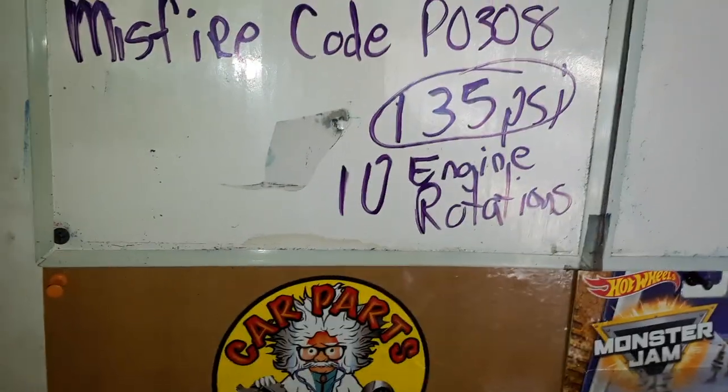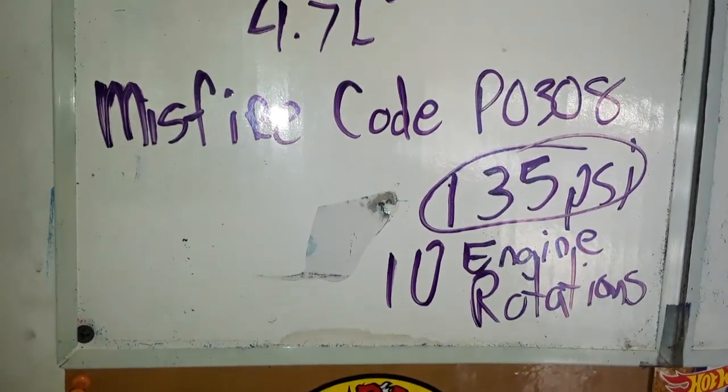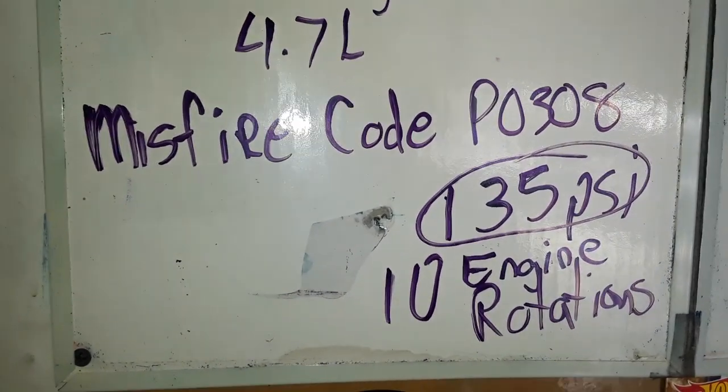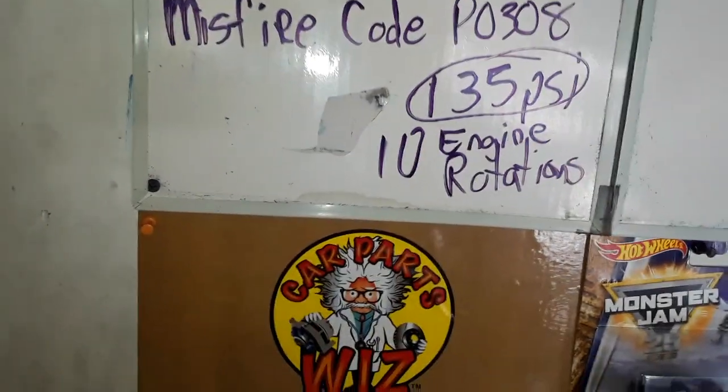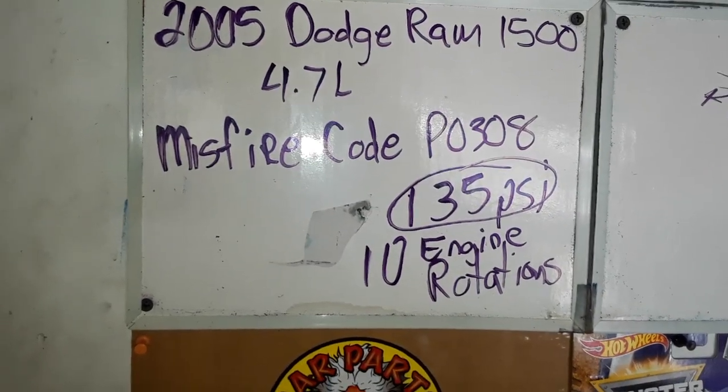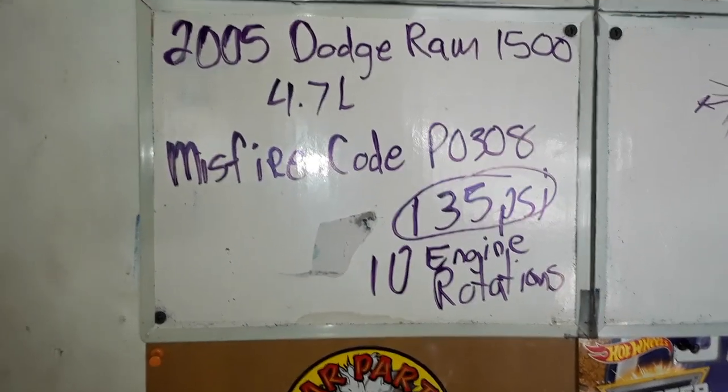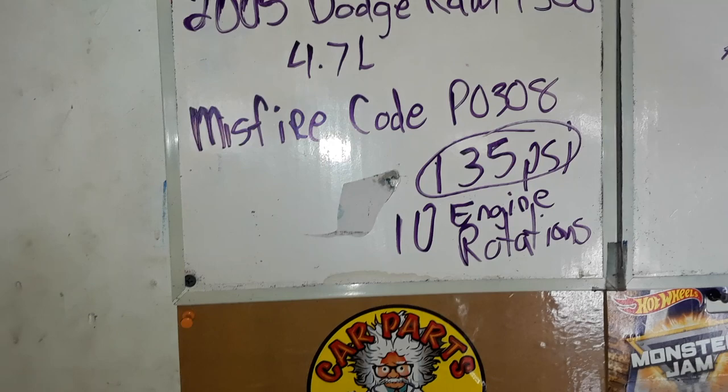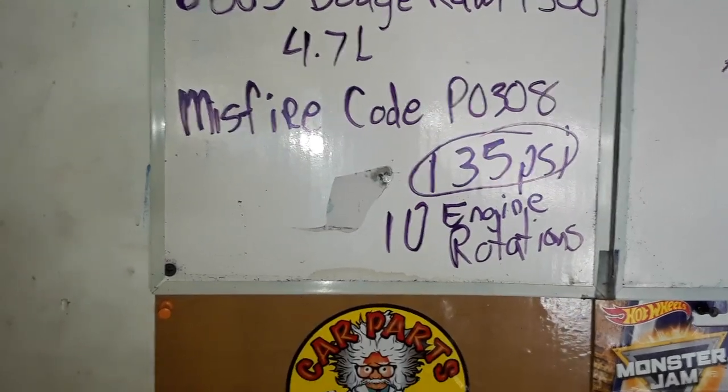I changed the spark plug, but the code came back - P0308. I had a brand new spark plug in it and the compression test was fine. I saw postings online that sometimes you can throw out a roller rocker and it'll stop the valve from opening and closing, which will cause the misfire. So I took the valve cover off on the passenger side.